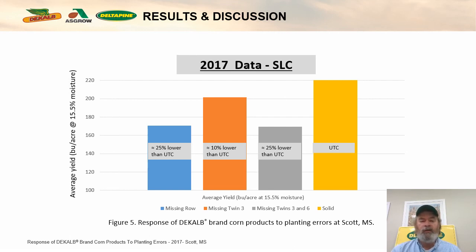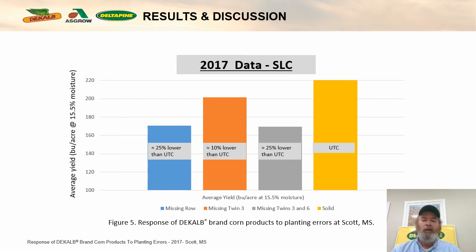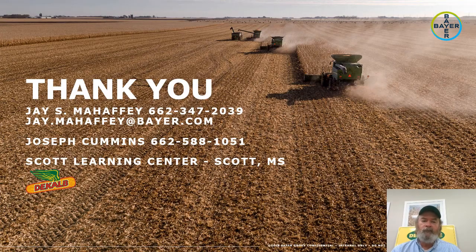The establishment of the corn crop early, as uniformly as possible, is very important. It's one of those things we only have influence over at planting, because the only way to establish the uniformity we need in the field after planting is to start over. I thank you for listening and for all your support over the years. We'll be here at the Learning Center if we can help — feel free to drop us an email or give us a call.